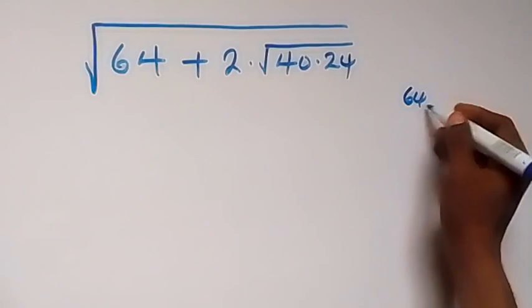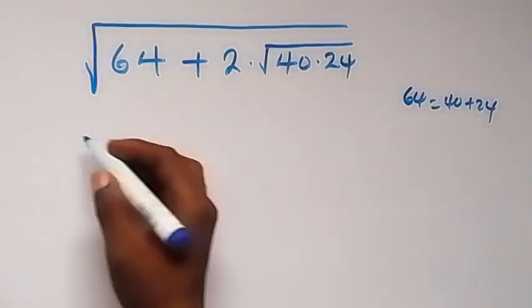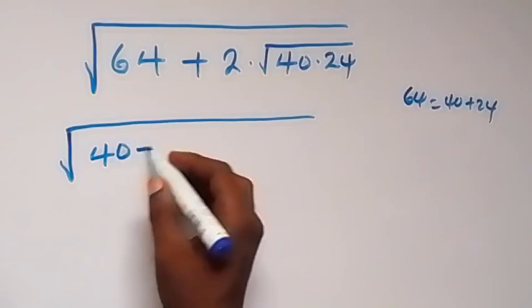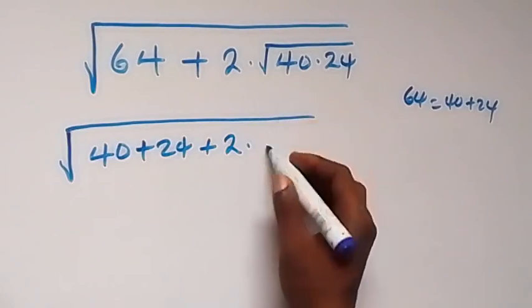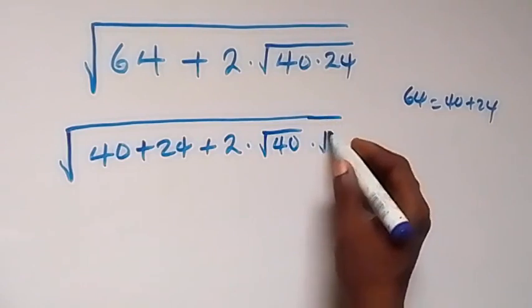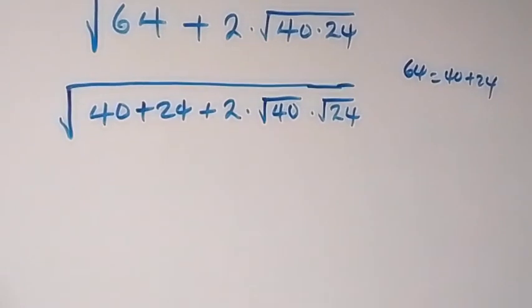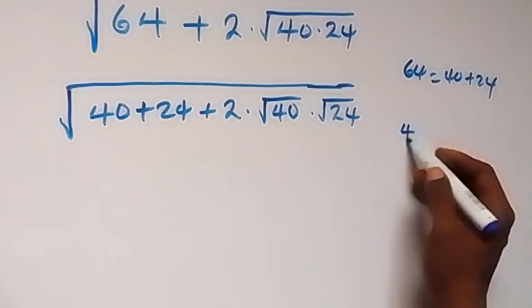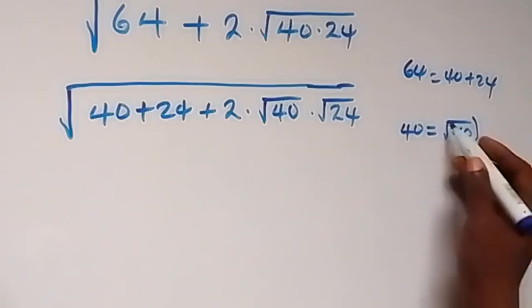Now we separate 64 as 40 plus 24. So this becomes the square root of 40 plus 24, plus 2 times root 40 times root 24.